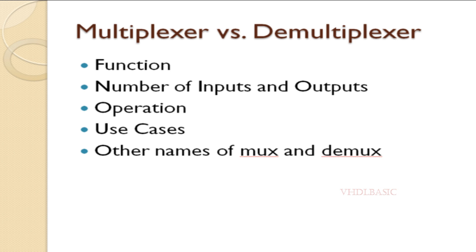In some contexts, a DEMUX is referred to as a decoder, especially when it is used to select one of several output lines based on a specific input code. The term one-to-N selector highlights the function of selecting one output from several output lines. The term data separator reflects its role in separating and routing data to different outputs. In memory and digital systems, a demultiplexer may be called an address decoder when used to select a specific memory location or device based on an address input.